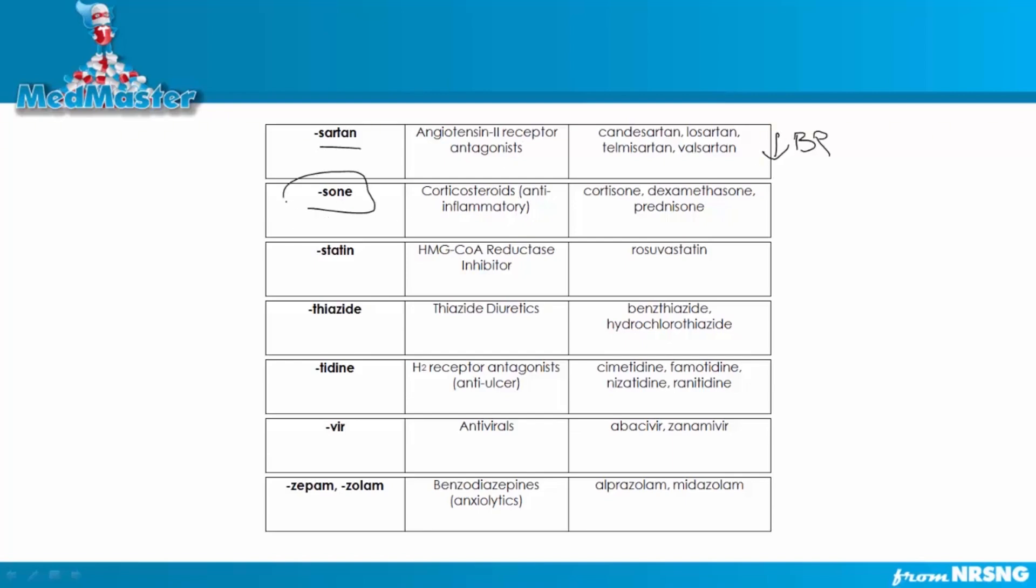And then we have our zones. These are also going to be like your courts, okay? Your prefix court. The suffix zone is going to be your corticosteroids, generally anti-inflammatories. But, you know, we'll talk more, but corticosteroids obviously have multiple uses. So that's going to be things like cortisone, dexamethasone, prednisone. Notice the zone on all of those.